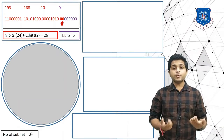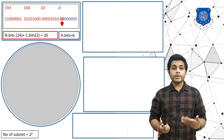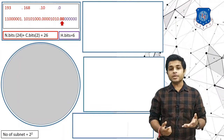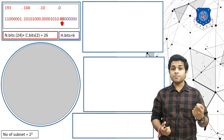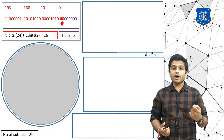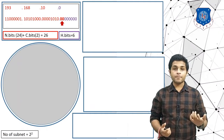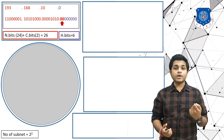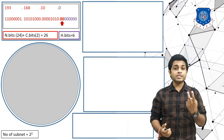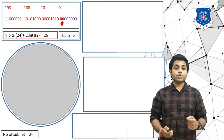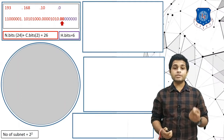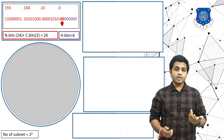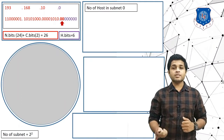From the converted bits you can determine how many subnets are possible. Since the size of the converted bits is 2, you get 2 raised to 2, which equals 4 subnets. Let's now look at Subnet 0.